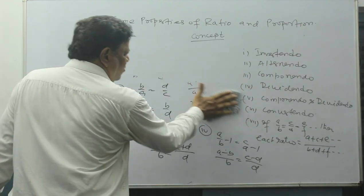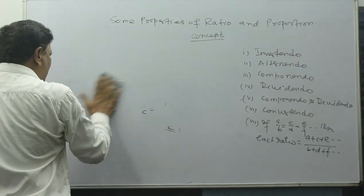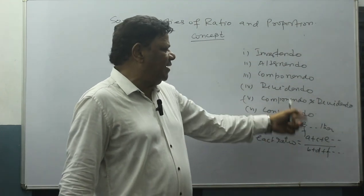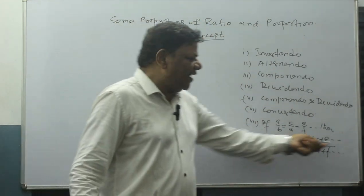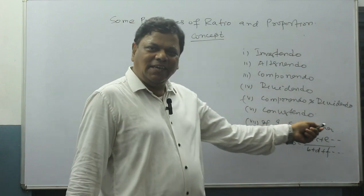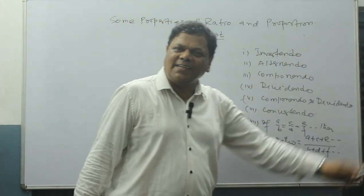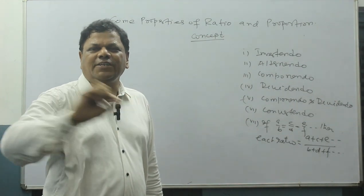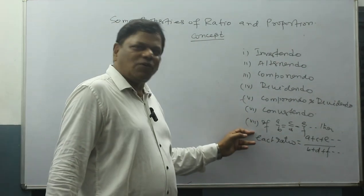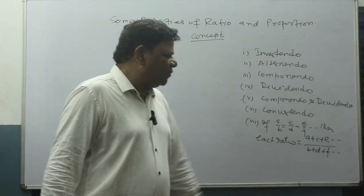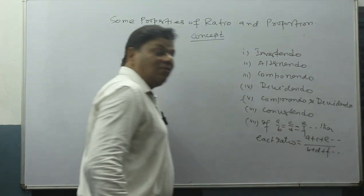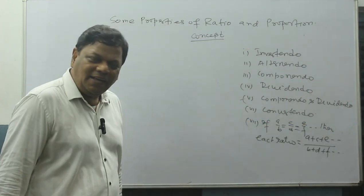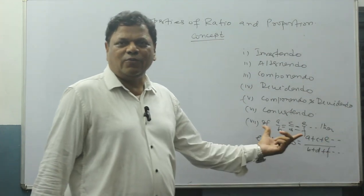Now, if multiple equal ratios are given — a/b = c/d = e/f — there is a property that says you can add all the numerators and divide by the sum of all the denominators: (a+c+e)/(b+d+f). Wherever this is required, I will apply this property.